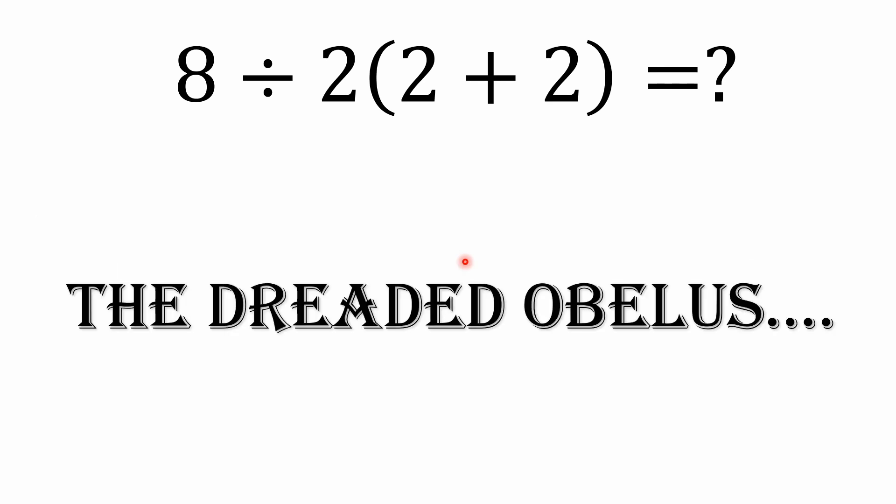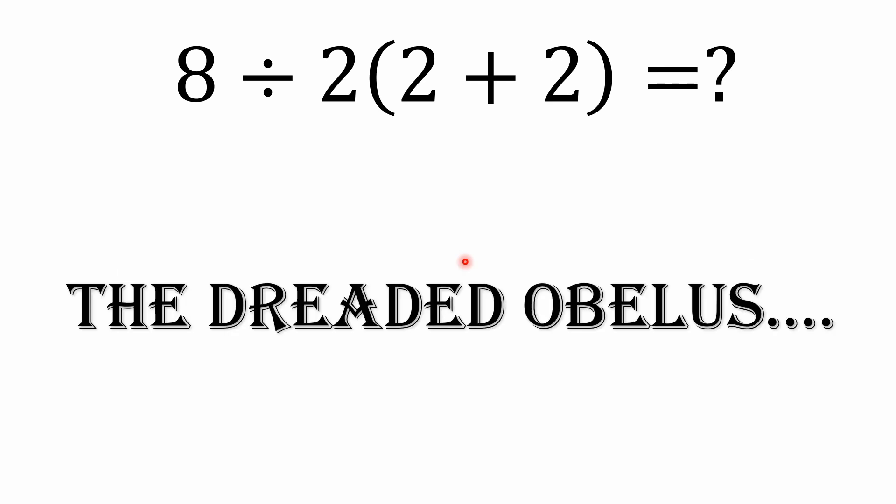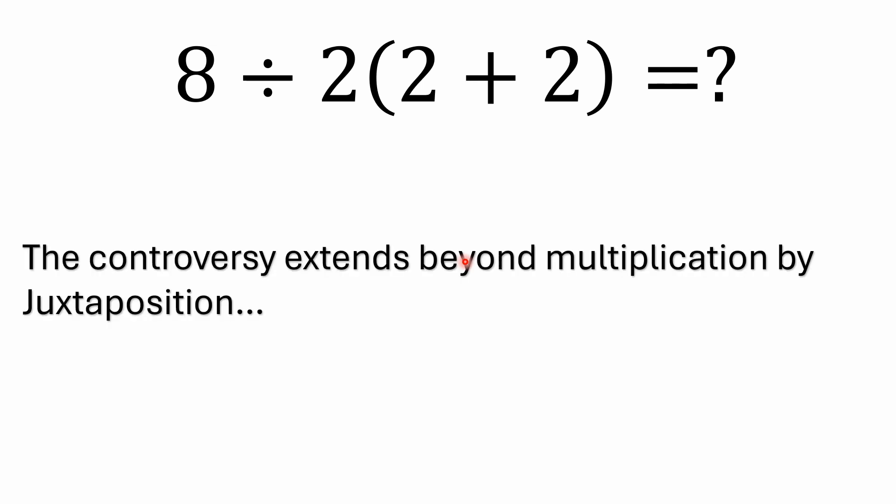it doesn't negate order of operations. Now, again, most of this stuff is historical context. The implicit multiplication is more of an older thing. You've got this thing, the dreaded obelus, too, that keeps coming up. People are still misinterpreting that one.